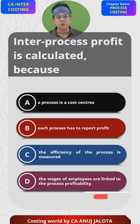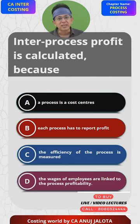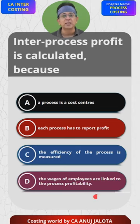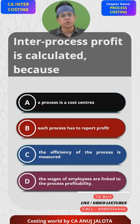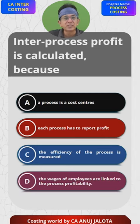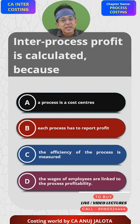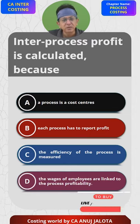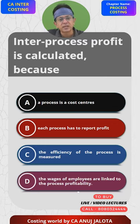So A cannot be correct. Now B can be correct — each process has to report profit, each department has to tell the company how much profit it is contributing. So B can be correct. For C, the efficiency of the process is measured — obviously that will tell us whether the department is working in an efficient way or not.